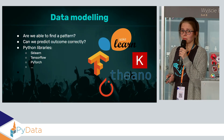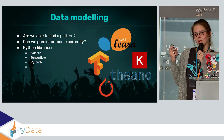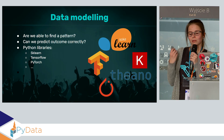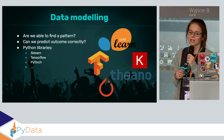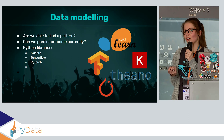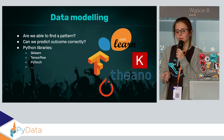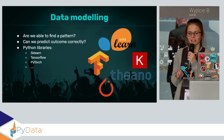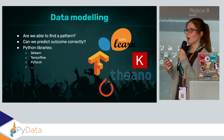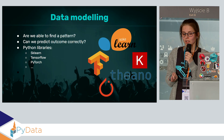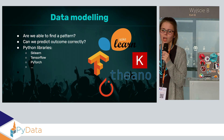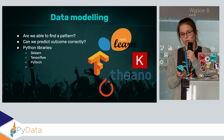The next thing is data modeling. This is where we answer the questions: are we able to find a pattern based on the data we have? Can we predict what we wanted to predict — in our case, better completion rate traffic? There are a lot of Python libraries that can be used. I'm a big fan of scikit-learn because I'm a big fan of simplicity, but we also use TensorFlow. You can test others — it will also depend on what your company is working with.